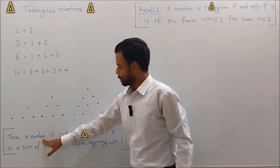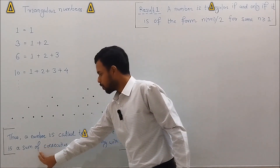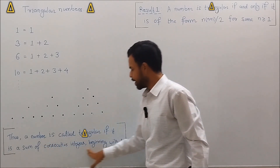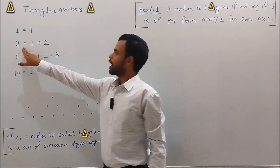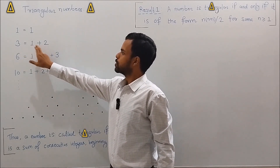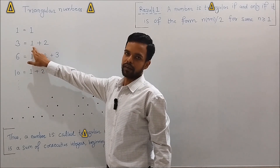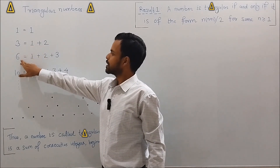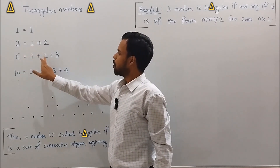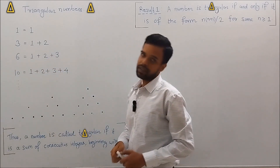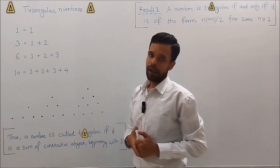A number is called triangular if it is a sum of consecutive integers beginning with 1. For example, 3 can be written as 1 plus 2, and 6 can be written as 1 plus 2 plus 3 — both are sums of consecutive integers beginning with 1, so these are triangular numbers.